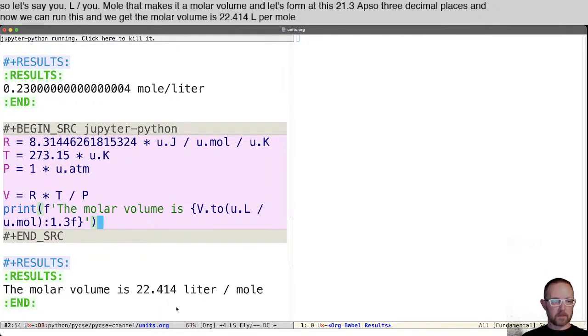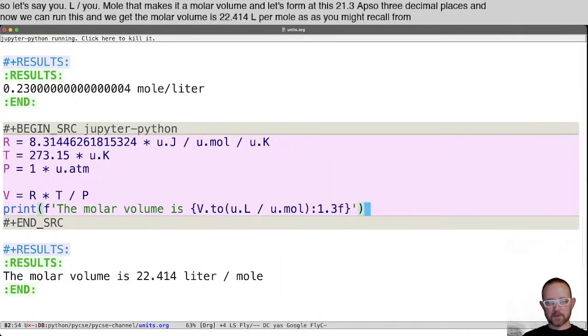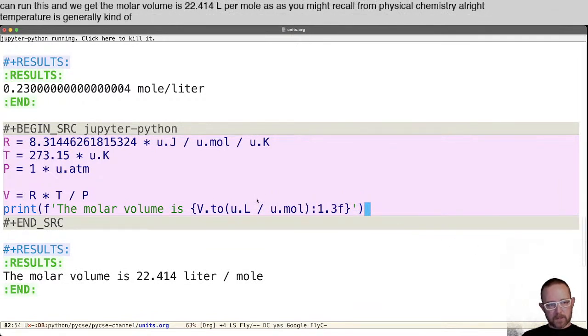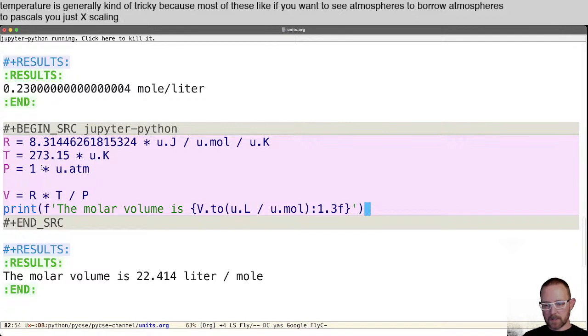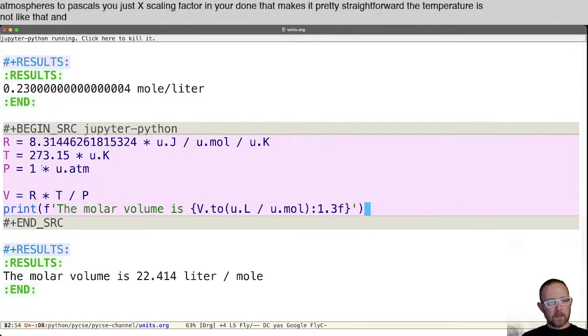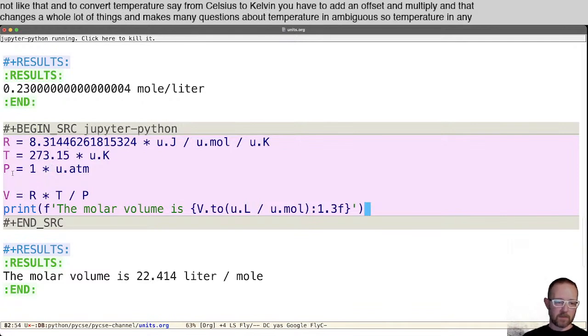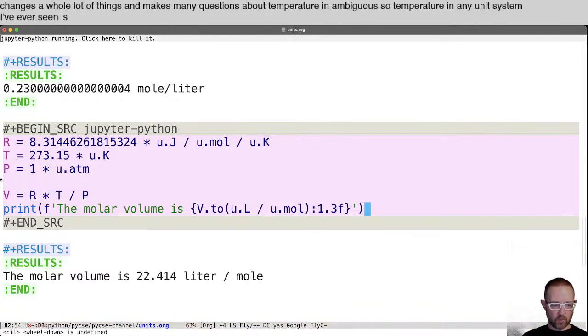All right. Temperature is generally kind of tricky because most of these, like if you want to see atmospheres to bar or atmospheres to Pascals, you just multiply by a scaling factor and you're done. That makes it pretty straightforward, but temperature is not like that. And to convert temperature, say from Celsius to Kelvin, you have to add an offset and multiply. And that changes a whole lot of things and makes many questions about temperature ambiguous. So temperature in any unit system I've ever seen is always more complicated than you want.